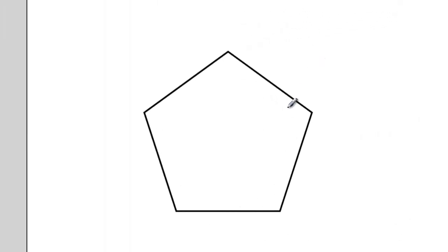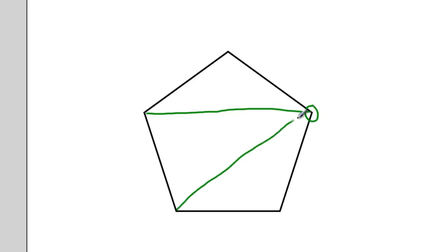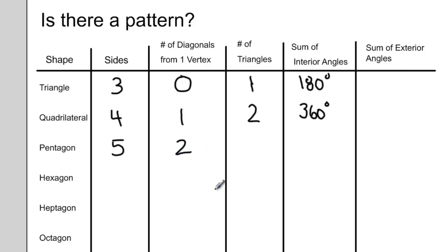When you drew your pentagon, if you were to pick one vertex and imagine drawing lines from that vertex to other vertices to make different triangles, you should be able to see that you can create three triangles from the vertex of your pentagon. So I can make two diagonals, constructing three triangles, which gives a sum of interior angles of 540 degrees. When you measured the angles in your pentagon, did you get close to 540 degrees?